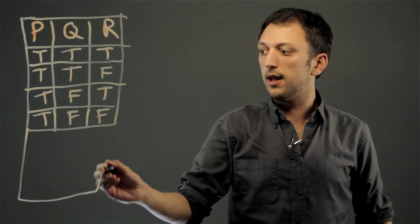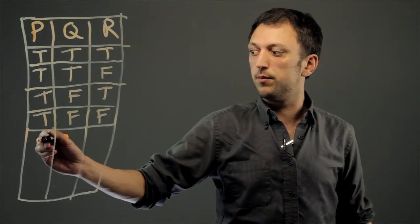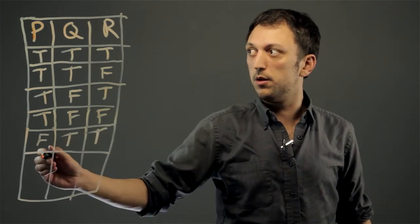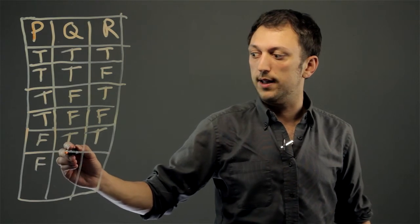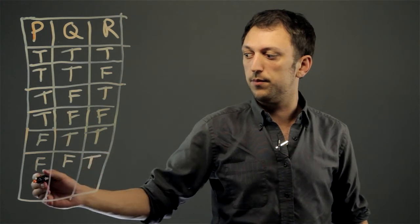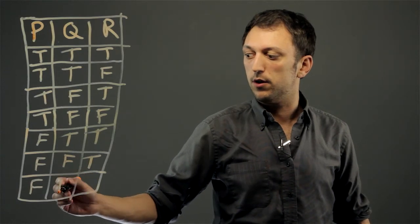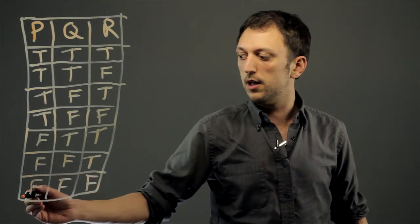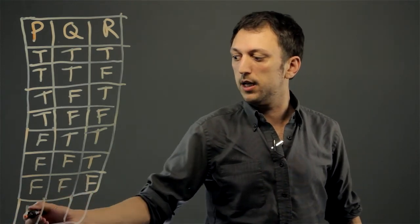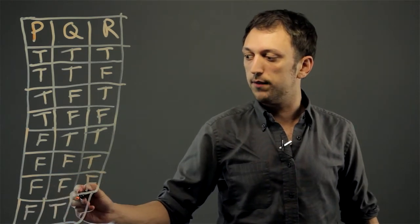And then we'd say P is false, Q is true, and R is true. P is false, Q is false, and R is true. P is false, Q is false, and R is false. And we could have the combination of P is false, Q is true, and R is false.